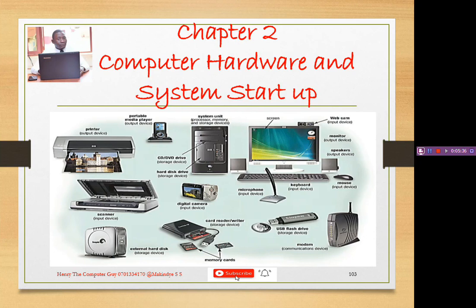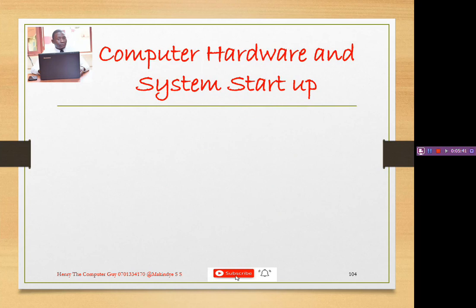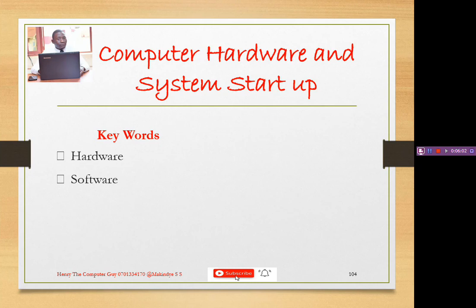So those are some of the items we are going to be looking at in our lesson on computer hardware and system startup. Before we go further, we need to look at some keywords for this lesson. First, hardware — these are specifically the physical or tangible components of a computer. Next, software — these are programs or sets of instructions that tell a computer what to do. A computer system needs both: the hardware alone cannot do everything; it needs software to direct it. For example, you may have a printer connected to your computer, but you use software to send a print task to the printer.